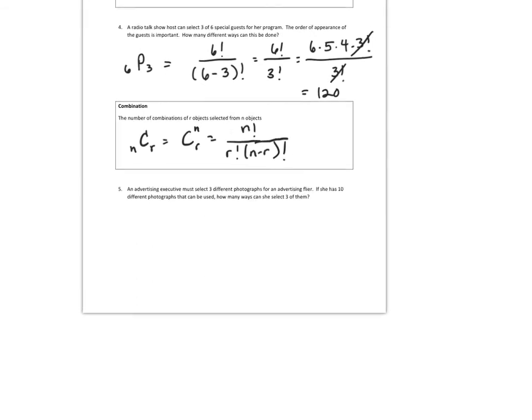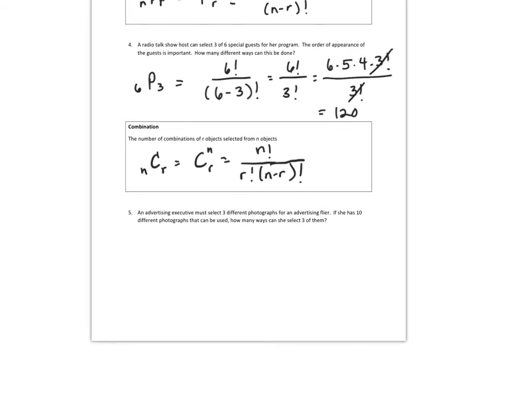An advertising executive must select three different photographs for an advertising flyer. If she has ten different photographs that can be used, how many ways can she select three of them? It doesn't say anything about order mattering. So it's going to be a combination, ten choose three. So that's ten factorial divided by three factorial times ten minus three factorial. That's ten factorial over three factorial times seven factorial.